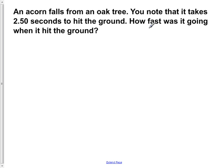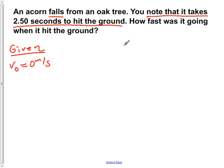Now the first step is to write down our given information. So the acorn falls from an oak tree, so our initial velocity v₀ is equal to 0 meters per second. And then we also note that it takes 2.5 seconds to hit the ground, so t is equal to 2.5 seconds.